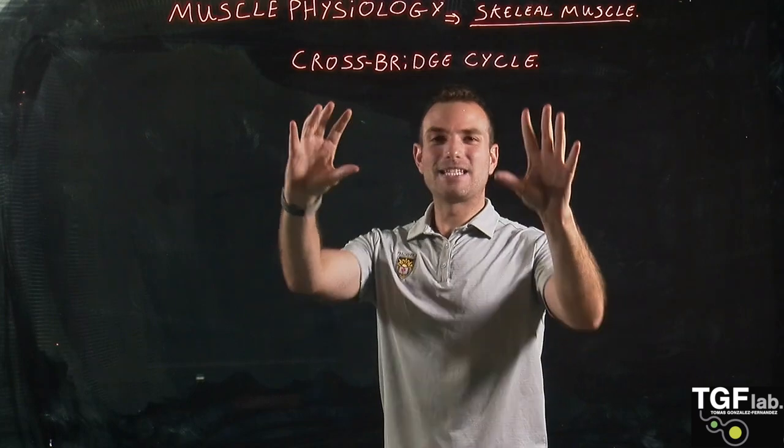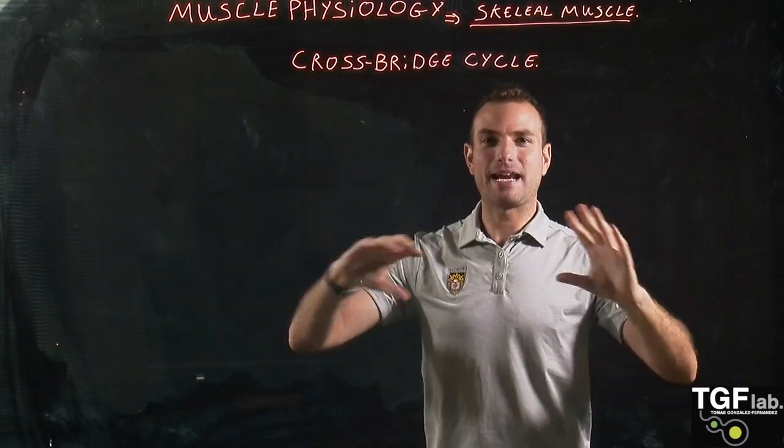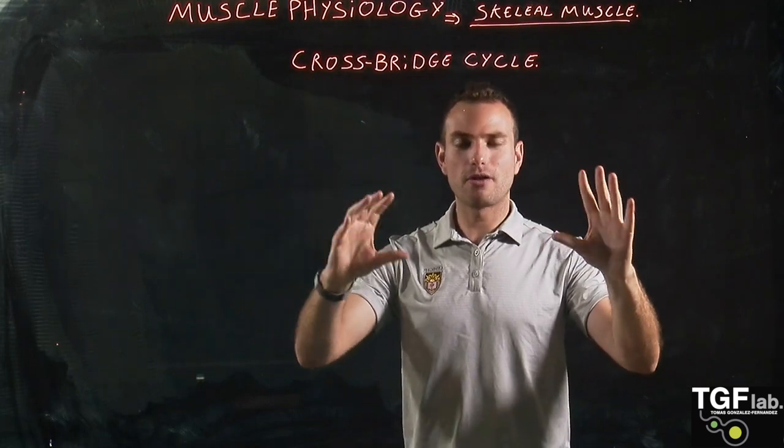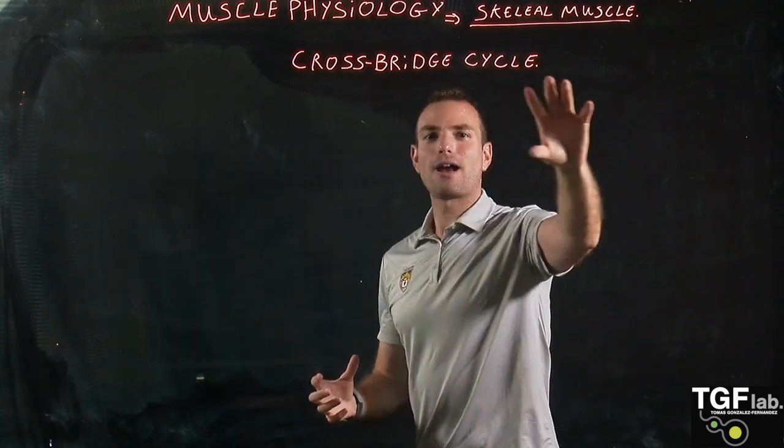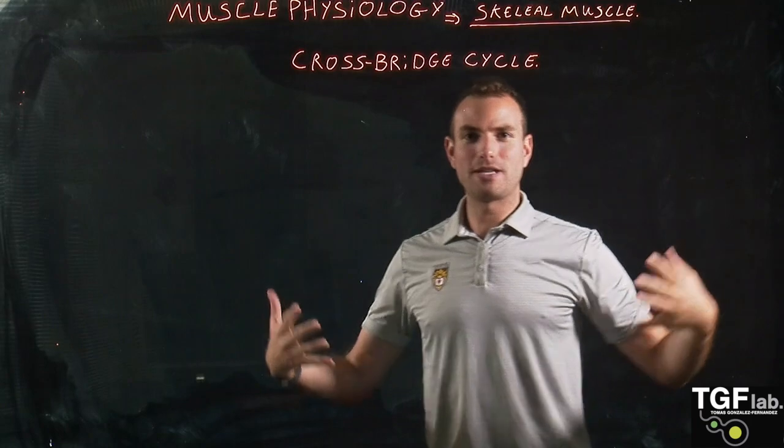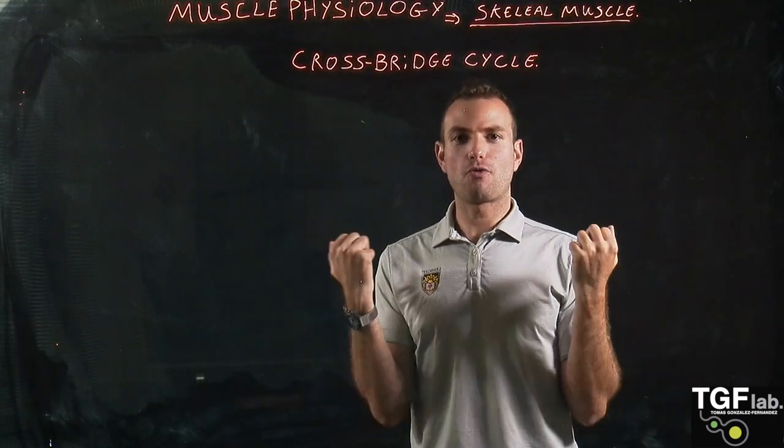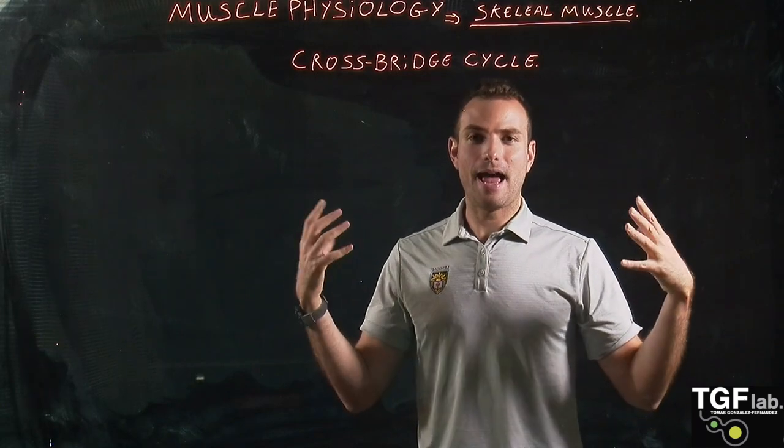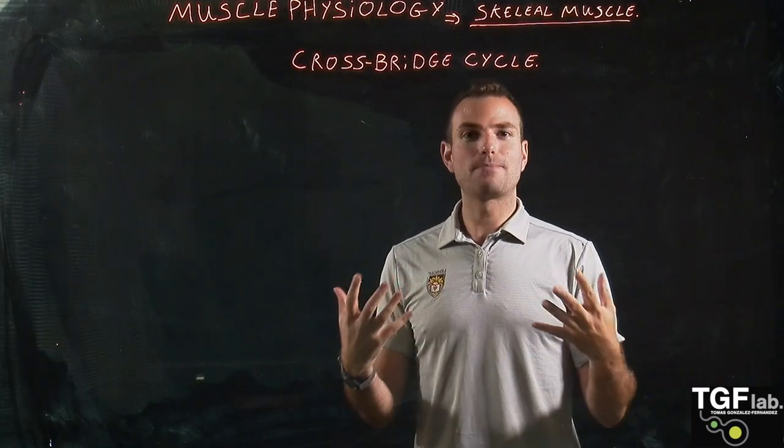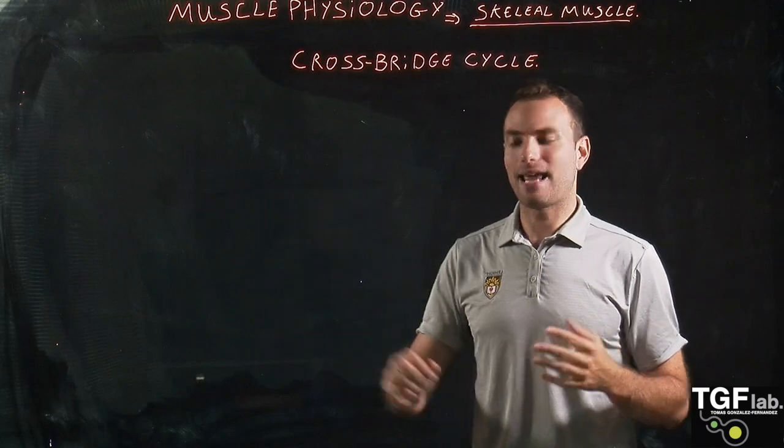Okay, so now let's focus. Once we have explained the excitation contraction coupling and the neuromuscular junction, let's talk about the cross-bridge cycle which is the mechanism by which our muscles are going to contract, by which the sliding filament process with the myosin and the actin occurs.